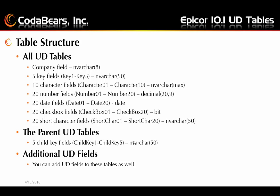All of the UD tables have the following fields in them. They start with the company field, which is a VarChar 8. There are 5 key fields, key 1 through key 5, and they are all VarChar 50.